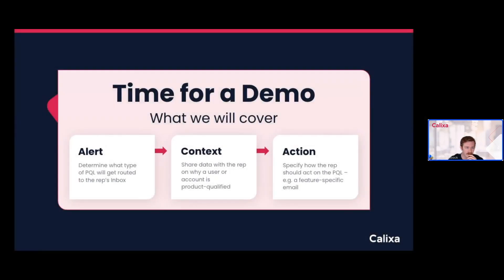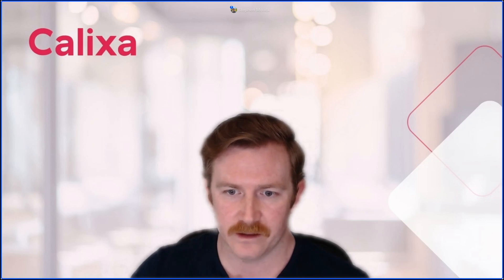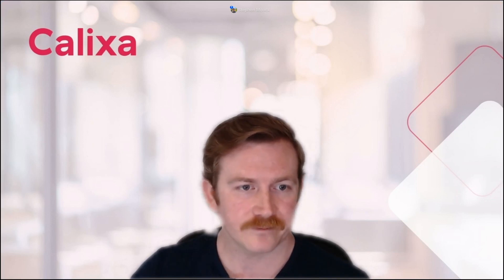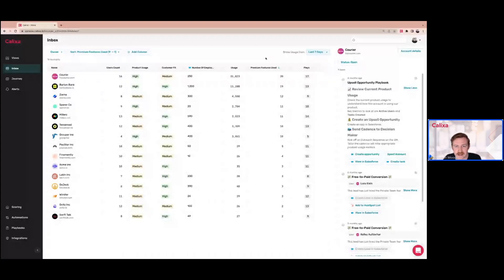We're going to switch over to a demo — it'll be brief, covering three quick areas: first the alert, then the context behind it, and how reps can take the corresponding action. So we're going to jump into inbox, which is essentially where a rep will live to see all of their plays. Inbox organizes the active plays based on the account they're a part of.